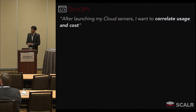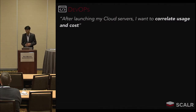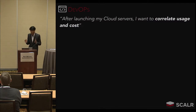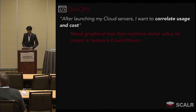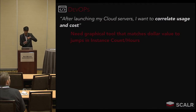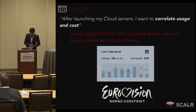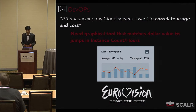The second set of tooling: after launching cloud servers, developers want to correlate usage and cost. This helps them develop more cost-efficient applications and identify where it makes sense to scale horizontally — using more of the same type of server — or vertically — using servers of larger capacity. DevOps needs a graphical tool that matches dollar value to jumps in instance count or hours. In this screenshot, you can see the last seven-day spend, giving you a sense of trend and the spikes that are happening and how much cost results from each spike.